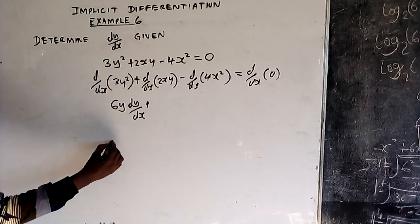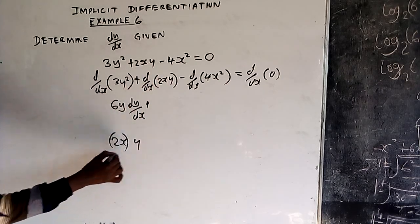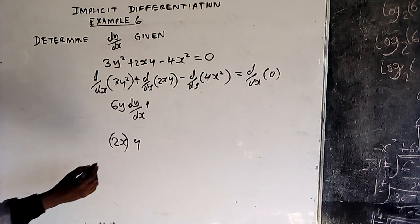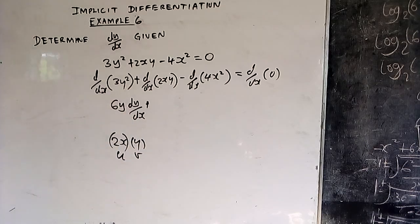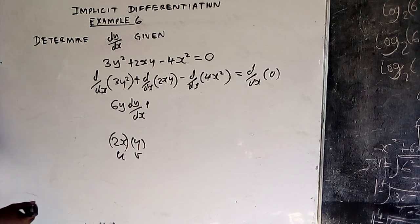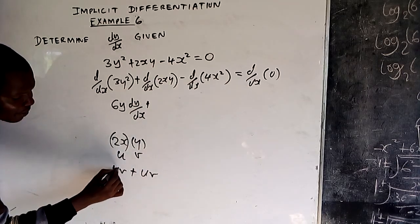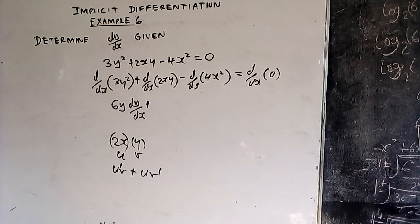So you go to rough work. You have your 2xy. You can let 2x be u and the whole of y be v. So this is a product of uv. If you have a product of uv, the derivative is u'v + uv' — u prime on one side, v prime on the other.